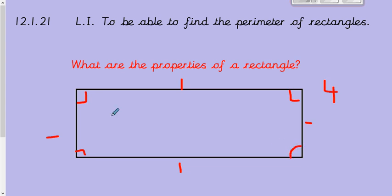Now perimeter, we're going to find out in a minute, is the distance around an object or a shape, and in this case we're looking at rectangles. So the perimeter of a rectangle is going to be the length of this side, this side, this side and this side.